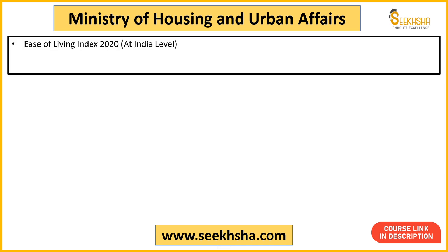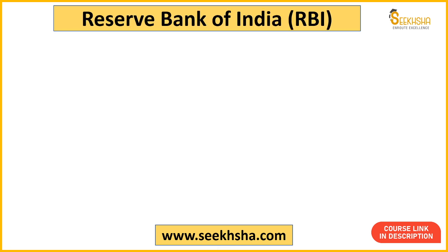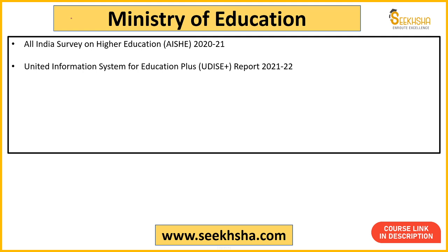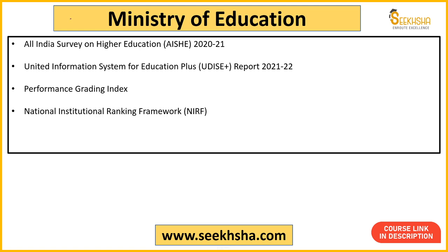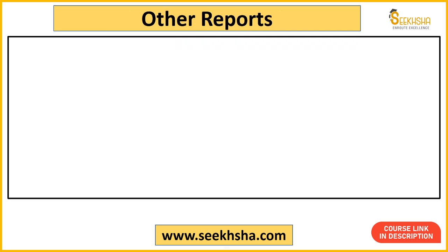School Education Quality Index is released by NITI Aayog jointly with Ministry of Education and World Bank. Export Preparedness Index is released by NITI Aayog and Institute of Competitiveness. India Innovation Index is released by NITI Aayog, Department for Promotion of Industry and Internal Trade, and CII. Ministry of Housing Affairs releases the Ease of Living Index — last released at All India level in 2020 — and the Swachh Survekshan Report. National Crime Records Bureau releases Crime in India Report and Accidental Death and Suicide Report. RBI releases the Financial Inclusion Index and Financial Stability Report. Ministry of Education releases the All India Survey on Higher Education, UDISE Plus Report 2021-22, Performance Grading Index, National Institutional Ranking Framework (NIRF), and Education Department Index at state level, with participation from National University of Educational Planning and Administration.